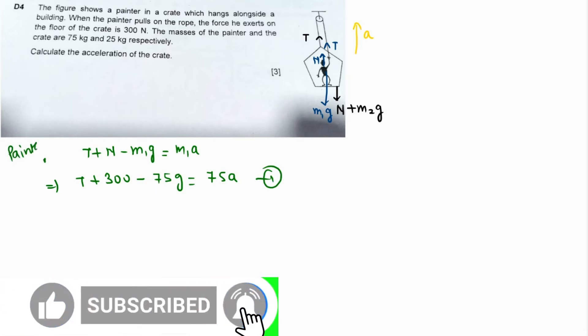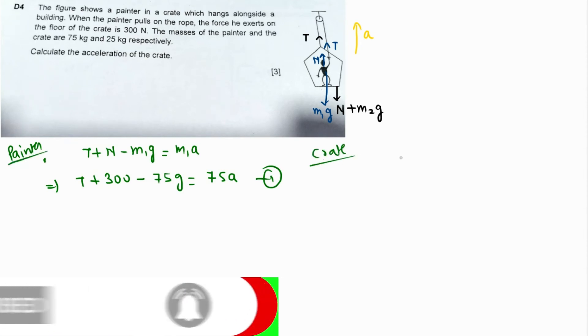For the crate: T minus N minus M2G equals M2A. This becomes T minus 300 minus 25G equals 25A. Let's call this equation two.